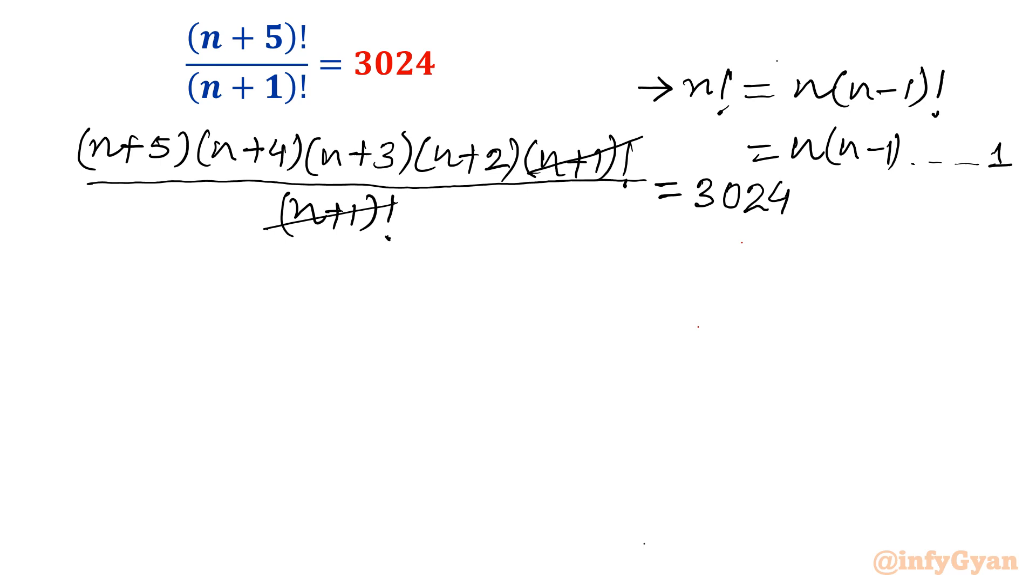Now this factorial equation is converted into one quartic equation. If you will see it, (n+5)(n+4)(n+3)(n+2) equals 3024. So the maximum degree you can see here is 4.